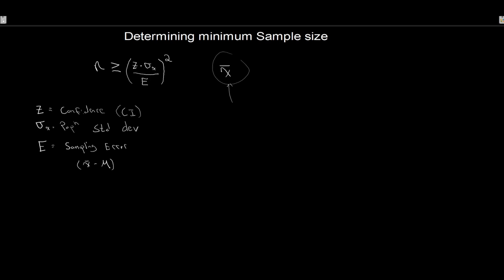From prior studies we know there is a standard deviation of 3 hours among corporate executives in how much TV they watch, and a previous study estimated the average time to be 12 hours per week. We want to check this — maybe corporate executives watch a lot less TV than that, or maybe more. We're not satisfied with the initial study and want to see for ourselves.